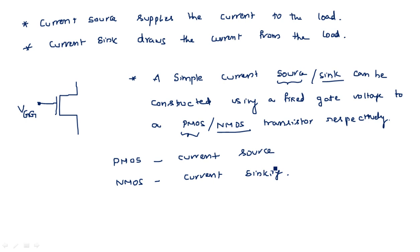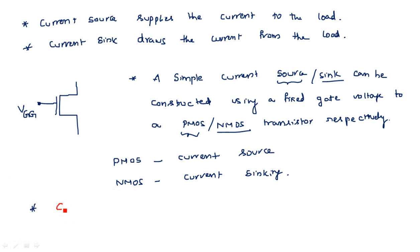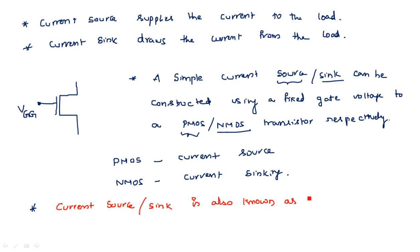We should maintain the VDS voltage such that VDS is less than VGS minus VT, which is the effective gate voltage. Now, one more important point: a current sourcing circuit or current sinking circuit is also known as a very important term — the current mirror circuit.